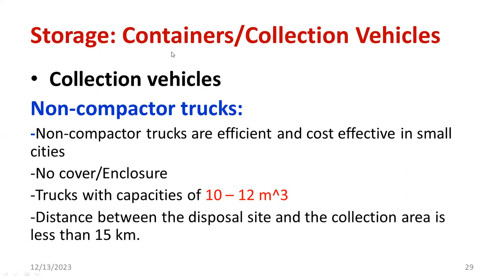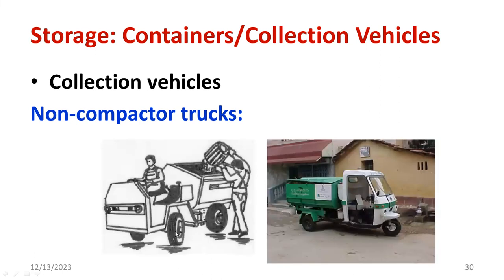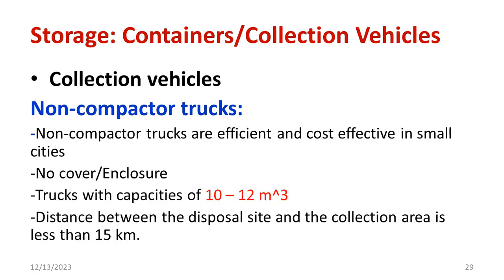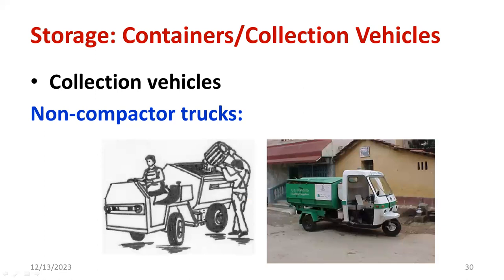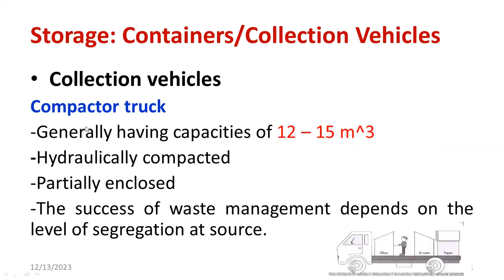The second type is the non-compactor truck. The capacity is 10 to 12 cubic meters. There is no enclosure, and it is typically used when the distance between the disposal site and the collection area is within 15 kilometers. We are not applying any compaction mechanism — we are directly dumping waste into the storage area without applying pressure to reduce volume. As the diagram shows clearly, the storage for waste in a non-compactor truck is open and no compaction is applied.